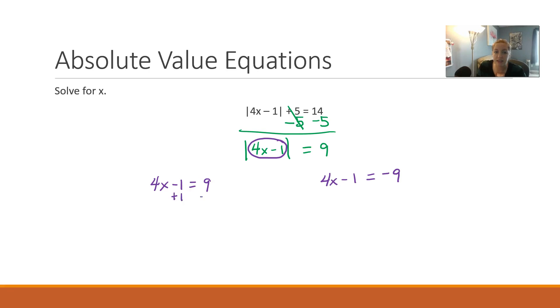4x equals 10. This did not turn out as a pretty number. That's okay. 10 fourths reduces to 5 halves. That's our first solution.